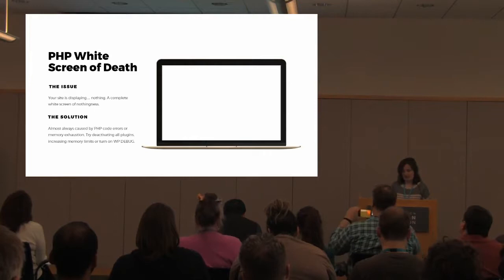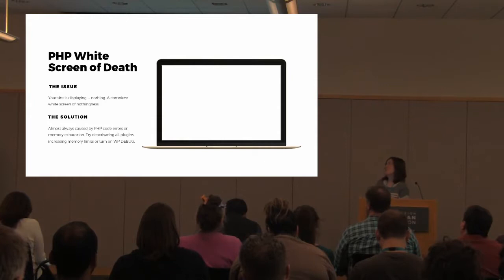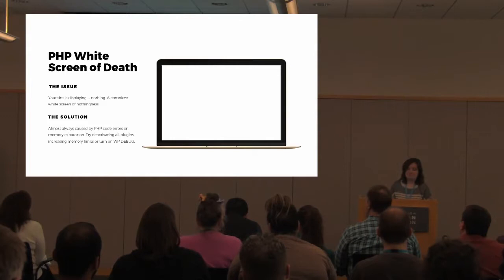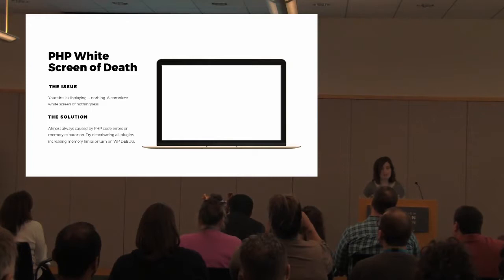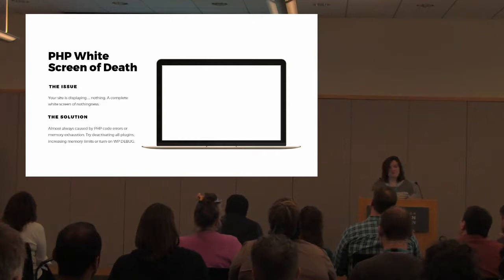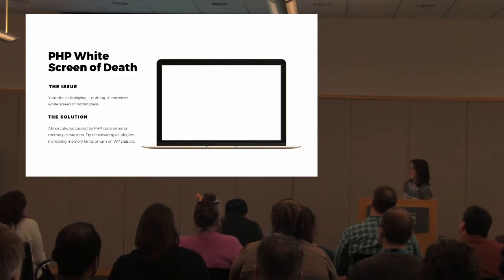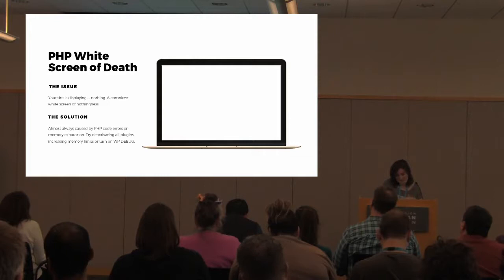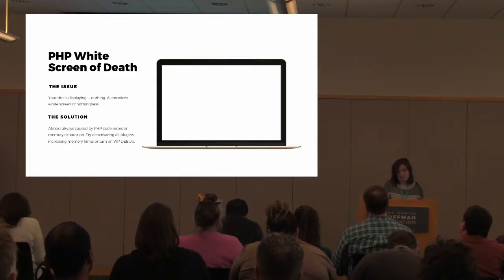This is everybody's favorite because it has such a great name: the white screen of death. When this is happening, your site isn't displaying anything at all and it doesn't give you an error message — PHP just says nope. A lot of times this is caused by memory exhaustion, or it can be caused by a rogue plugin update or theme update. It's never a fun one to fix because you don't have the same clues as other errors. I'm going to go into memory limits and also WP Debug, which can shed some light on a PHP white screen of death.